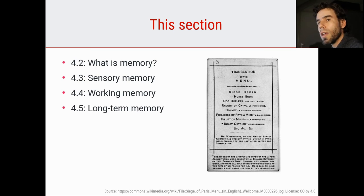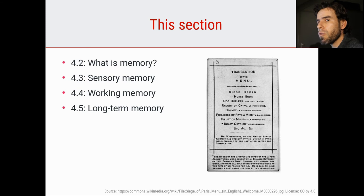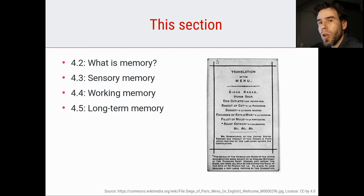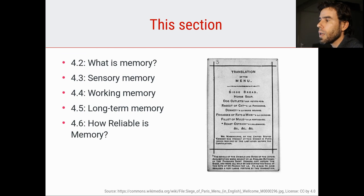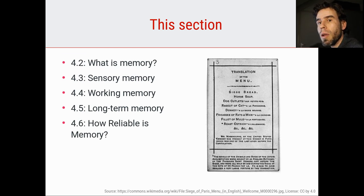We're going to take a look at working memory, which is essentially every form of memory that lasts for a very long time and does not require active rehearsal. And finally, we're going to look at a very fascinating subject: the reliability of memory, and the various ways in which memory can be distorted or lost.